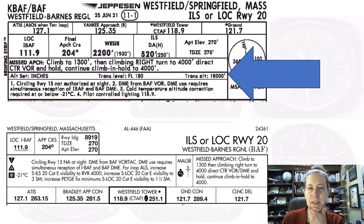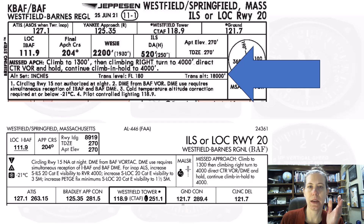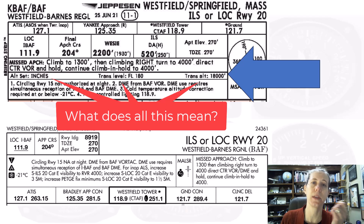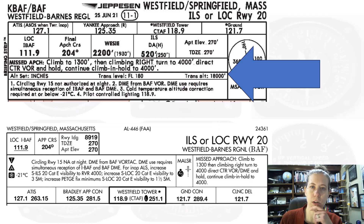This is the line I'm talking about. It's in Jeppesen's briefing strip and it talks about altimeter setting, inches, trans level, flow of 180, trans altitude, 18,000 feet. If you only fly in the U.S., you might not even notice that part of the chart.